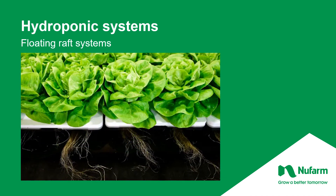The floating raft system is similar to the tray system, except you have more plants floating literally on top of a bed of water. You can see the difference from the gully trays — they are not self-contained units, but they are all sharing the same area.